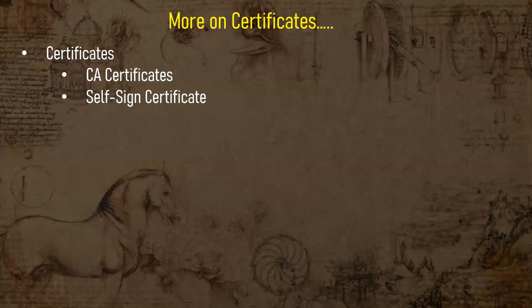When we talk about an internal network or a development and testing environment, you don't need to purchase any certificate from external authorities. There you can use your own certificates specifically required for testing. It is exactly the same as a CA certificate — it gives you the same functionality — but the only difference is that it is not authorized by any CA authority. It is signed by you: a self-signed certificate.